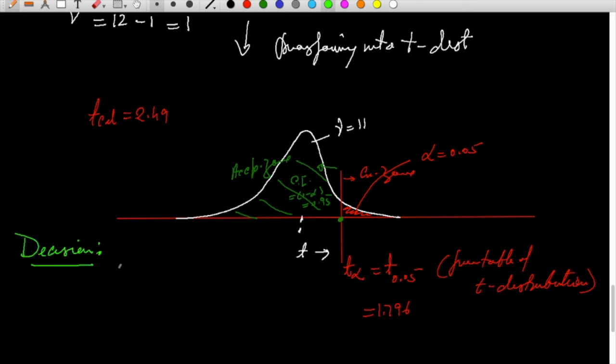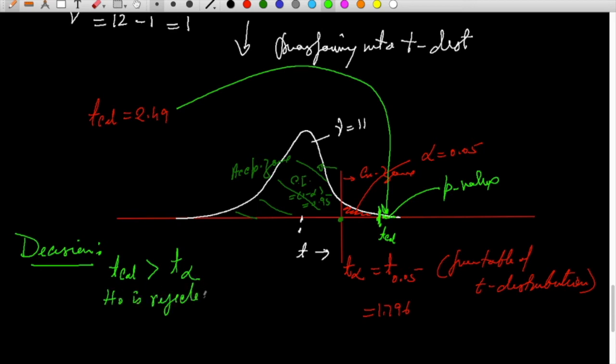What will be the decision here? T-calculated is more than this. T-calculated goes here. So this will be the point t-calculated. T-calculated is more than t-alpha, means H-naught is rejected.